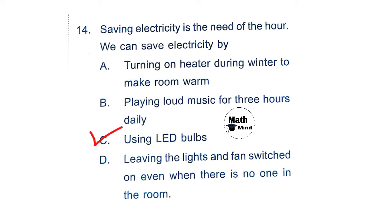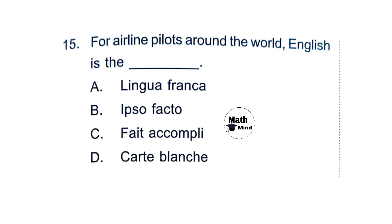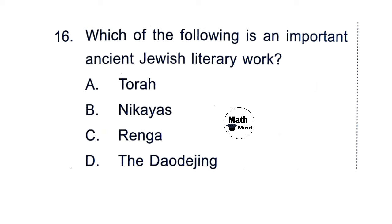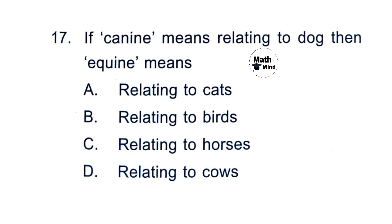Question 15: For airline pilots around the world, English is the — option A is correct: lingua franca. Question 16: Which of the following is an important ancient Jewish literary work? Option A is correct: Torah. Question 17: If 'canine' means relating to dog, then 'equine' means option C: relating to horses.